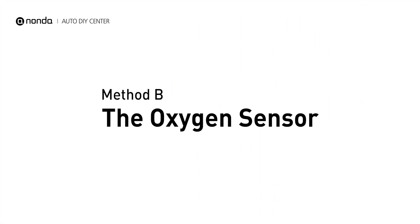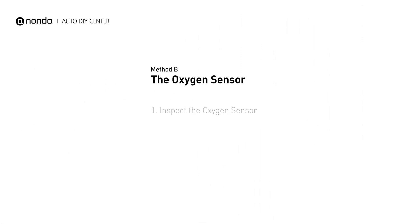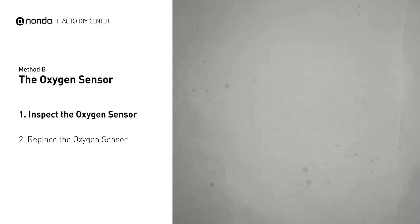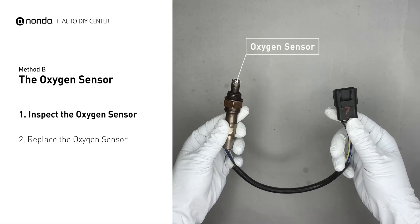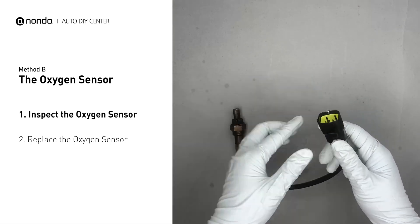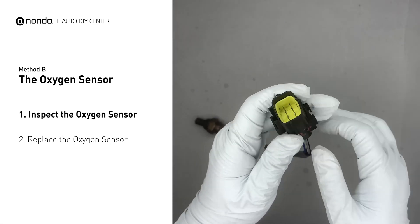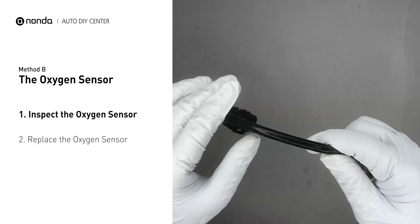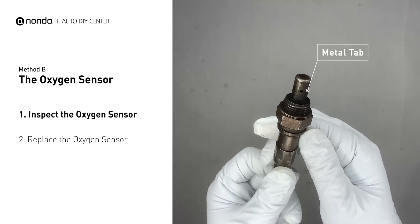Method B: the oxygen sensor. Oxygen sensors are mounted directly onto the exhaust pipe near the catalytic converter. Locate the sensor that responds too slow as it ages. Visually check the oxygen sensor's electrical connections, wire harness, and metal tabs for any damages.